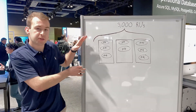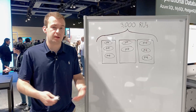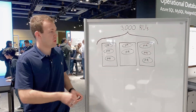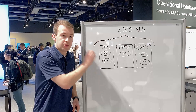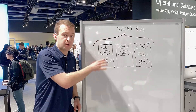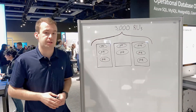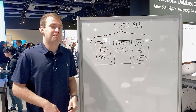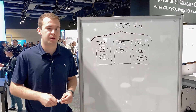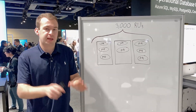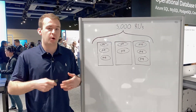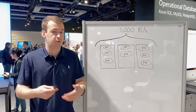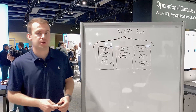I've done a little diagram here of a Cosmos container — in other words, a collection in Cosmos DB — and it's a collection that has three different physical partitions. The first part of our talk will cover how partitioning works, going deep behind the scenes into all the technical details. Then at the end we'll take a step back and talk about what you, as a developer, need to know to partition your data effectively in Cosmos DB.